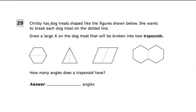In this problem, Christy has dog treats shaped like the figures below. She wants to break each dog treat on the dotted line. Draw a large X on the dog treat that will be broken into trapezoids.